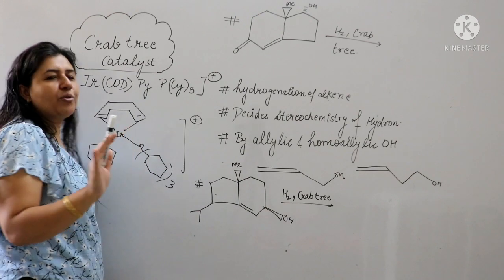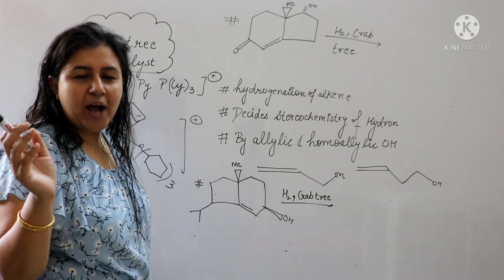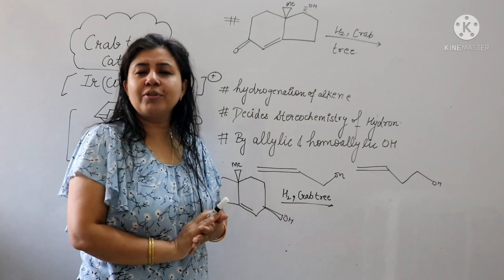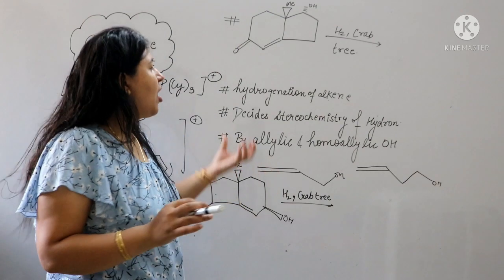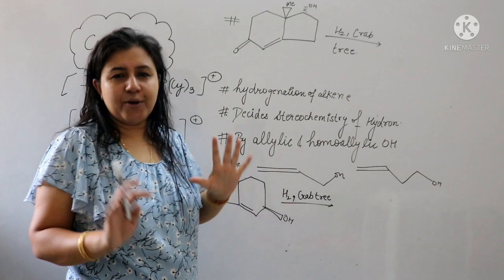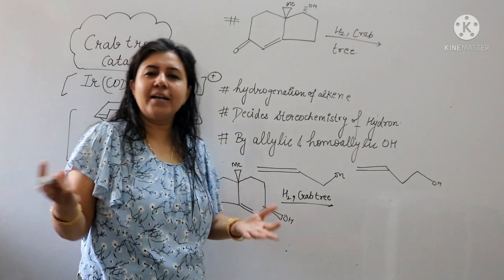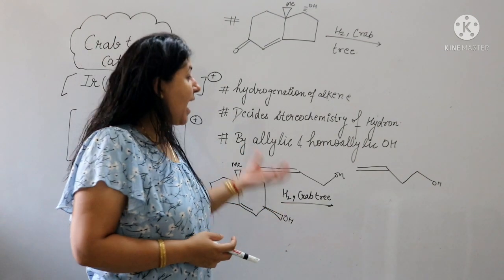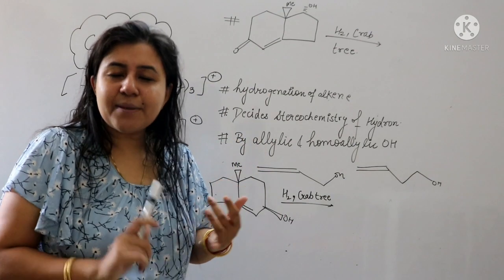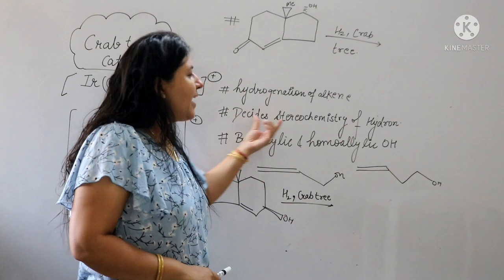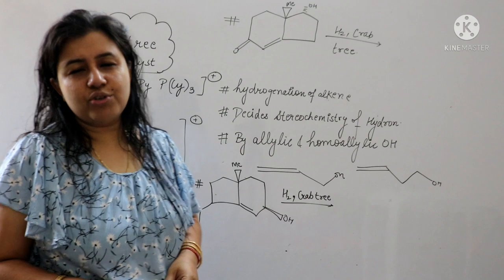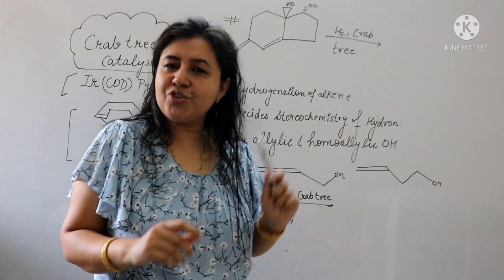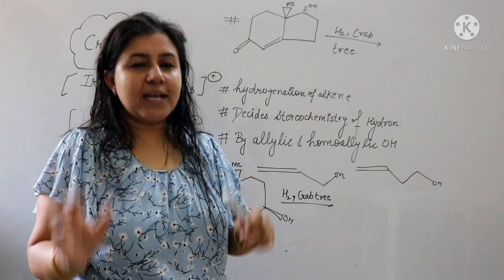We have to understand what its work is. It's called hydrogenation of alkene — alkene hydrogenation. We do this with platinum. The most important thing is that it decides the stereochemistry of hydrogen. What will be the stereochemistry of hydrogen? This is the Crabtree catalyst.